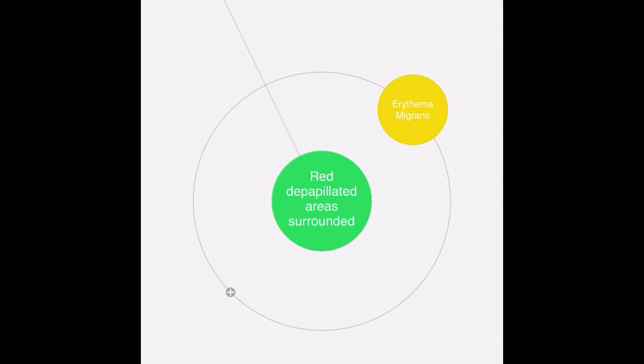Coming to the next category, when the signs consist of red depapillated areas that are surrounded by a white rim, especially when located on the dorsum of the tongue, then most likely it points towards erythema migrans, that is geographic tongue.